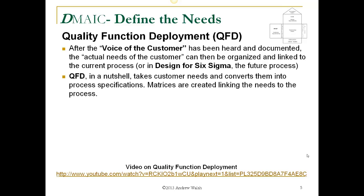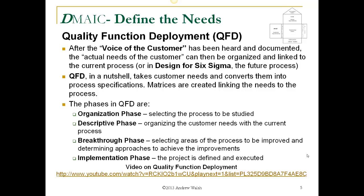Quality Function Deployment, in a nutshell, takes customer needs and converts them into process specifications. Matrices are created linking the needs to the process. The phases of QFD are: the organization phase, where you select the process to be studied; the descriptive phase, organizing the customer needs with the current process; the breakthrough phase, selecting areas of the process to be improved and determining approaches to achieve the improvements; and the implementation phase, where the project is defined and then executed. There's a link provided for a nice video on QFD.